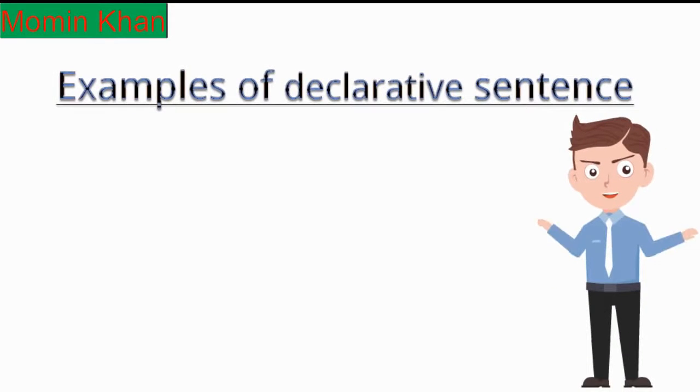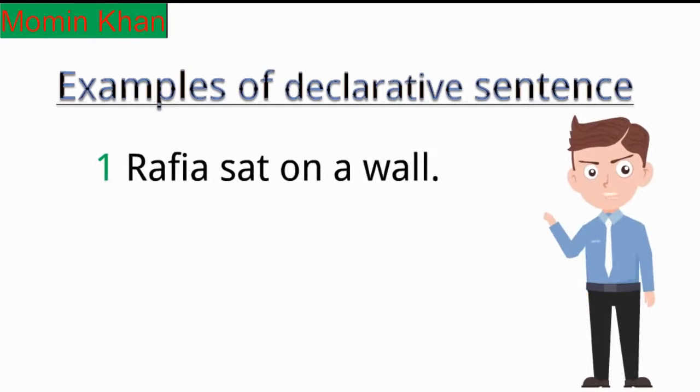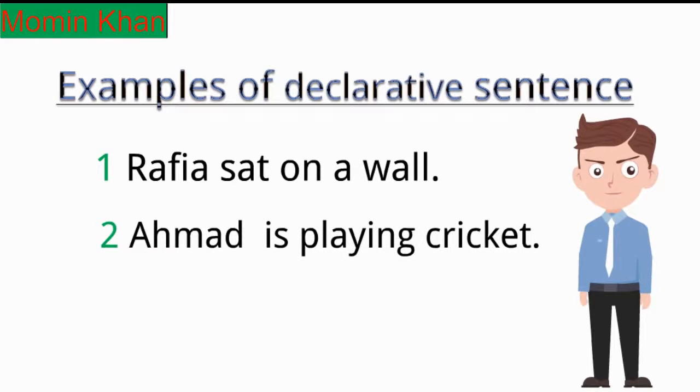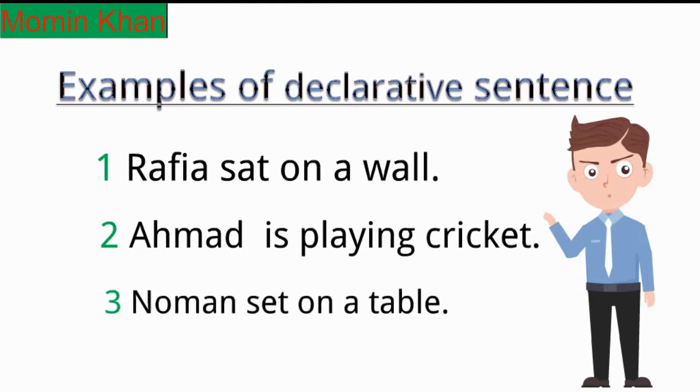Examples of declarative sentence: Rafia sat on a wall. Ahmad is playing cricket. Noman sat on a table.